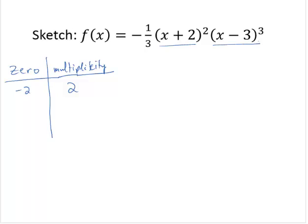And my second factor, x minus 3, gives me a zero of 3 and a multiplicity of 3, looking at the exponent.